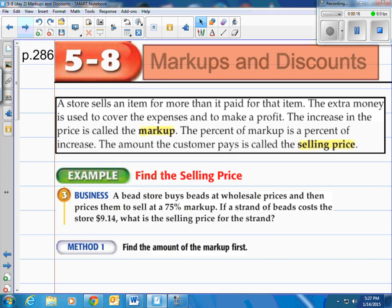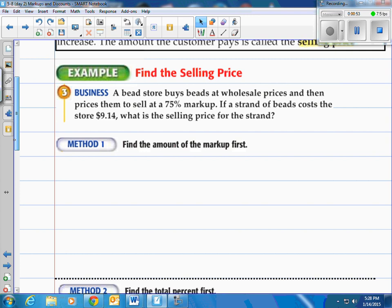When we see markups and discounts, we see them at stores. For instance, a store sells an item for more than it paid for that same item. The extra money is used to cover expenses and to make a profit. Obviously the increase in the price is called the markup. So they might buy it for a dollar, they mark it up to $1.50. That means they're going to use that 50 cents to pay for expenses and anything left over we call profit. The percent of markup is a percent of the increase. The amount the customer pays is called the selling price. Let's talk about finding a selling price given a markup.